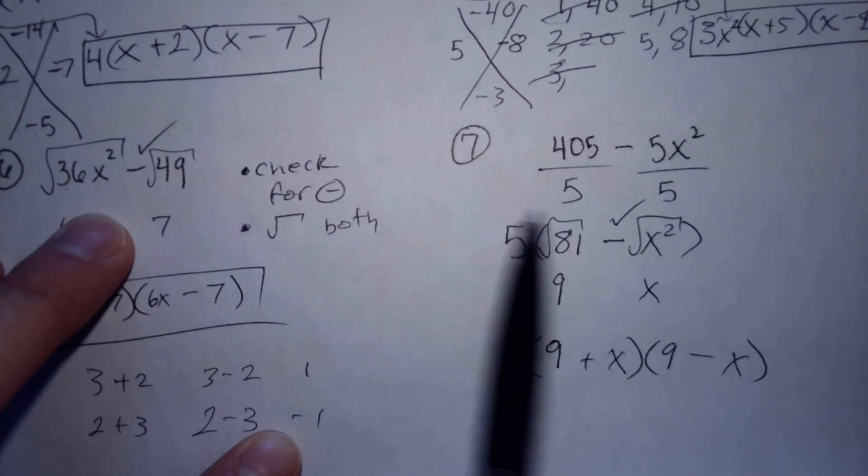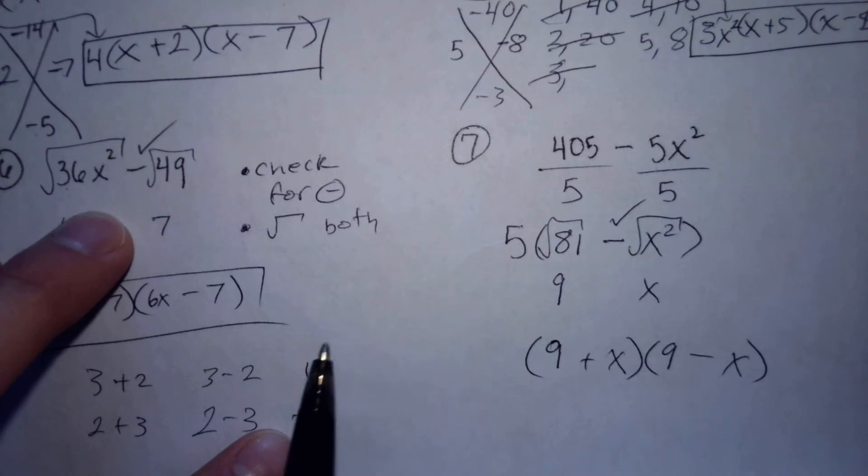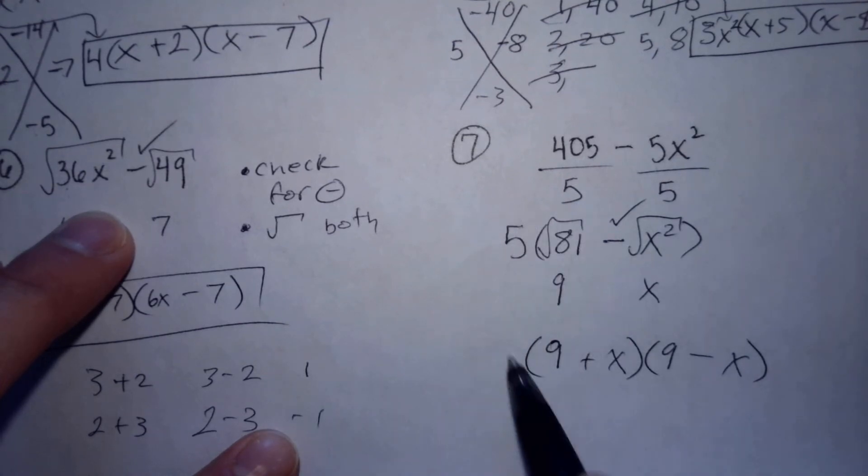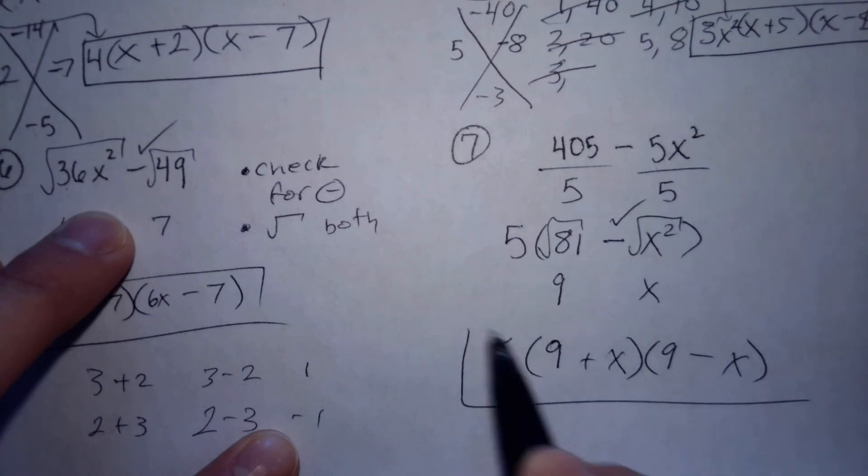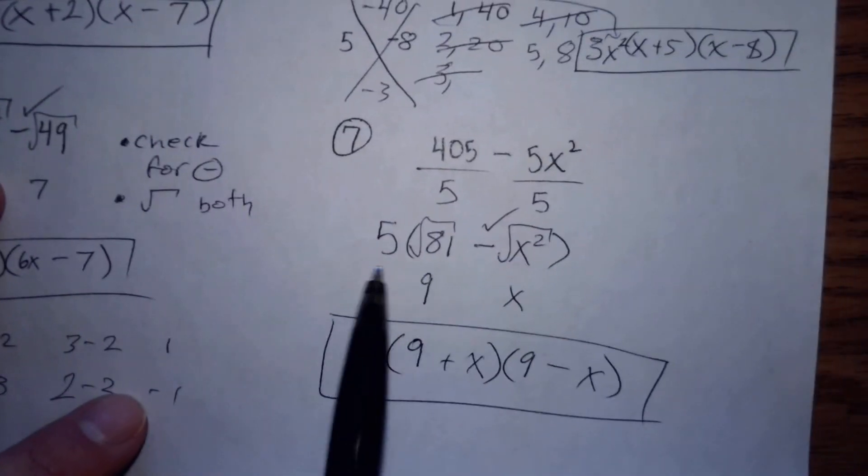You could have done that if you factored out a negative - there was a trick for that. But if you wrote it like this, I accepted it as long as you brought down the five.